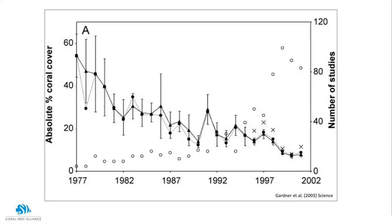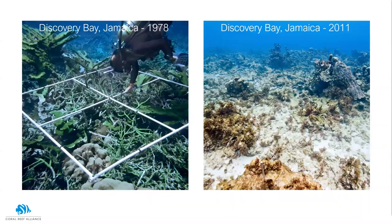To turn that graph into photos, here are two images from Discovery Bay in Jamaica — one from 1978 on the left, one from 2011 on the right. These photos were taken from the exact same point, anchored to a survey pin. If you've got sharp eyes, you'll see that same survey pin at the bottom of the photo on the right.